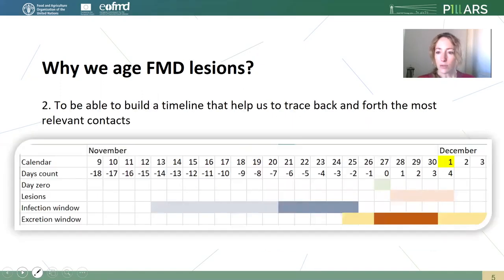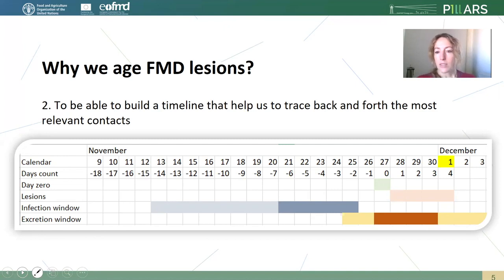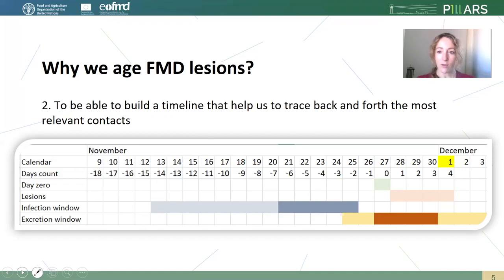In this case, we would probably take a blood sample to do a serological test. The second reason why we age the lesions during an outbreak investigation is to be able to build a timeline that helps us to trace back and forth the most relevant contacts. And this is what we are going to see now — how to build this timeline and how to use it.